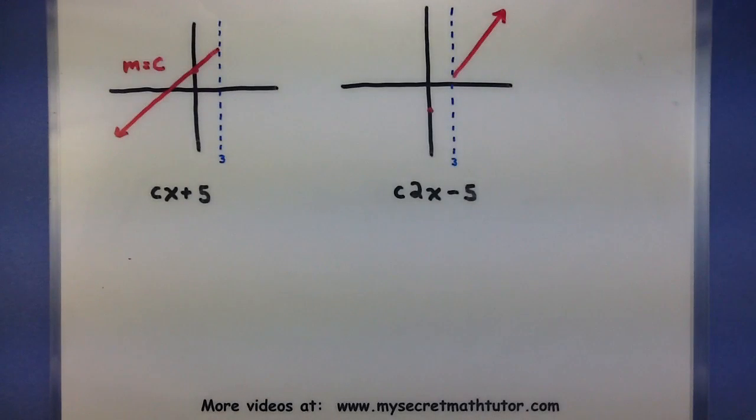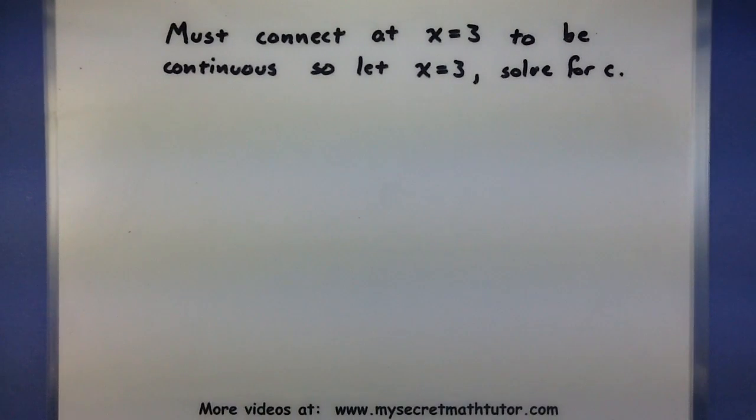So you can see that depending on the value of c, it could change the slopes of these lines and both of them could actually end up meeting up at 3. So the key for this one is figuring out what slope or what c value I have to choose so that these guys line up. Now our problem area is at 3, so I definitely want them to line up at 3. Since these things must connect at 3, I'll set x equals 3 and then force the pieces to be equal to one another.